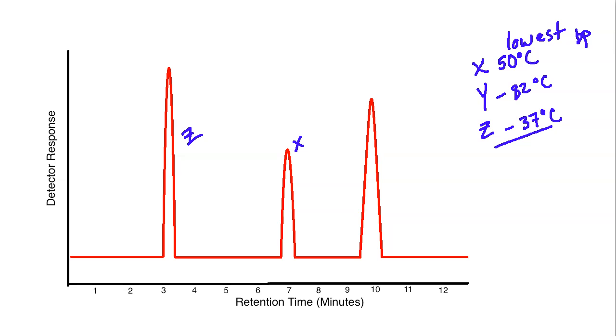So X would be associated with the peak that's right around the seven minute mark. And then finally, you would have 82, that's Y. And that would be this last one here that looks to be right around the 10 minute mark. So it's pretty simple to match up your compounds and directly relate them to the peaks to identify which peak is talking about which compound.